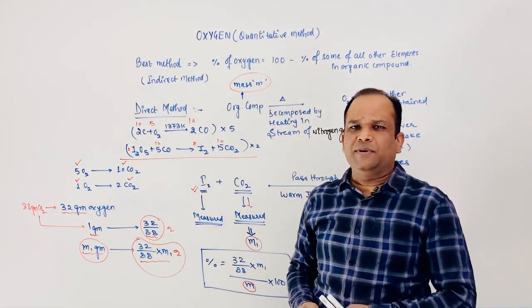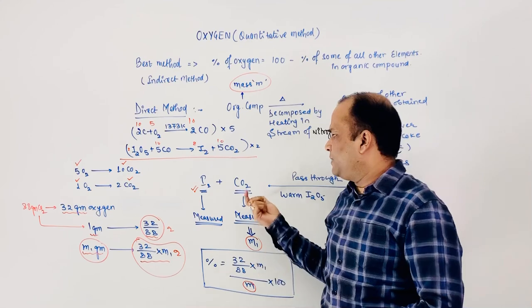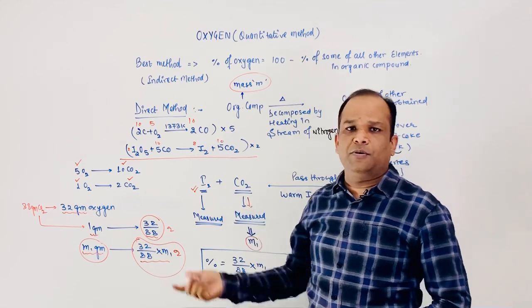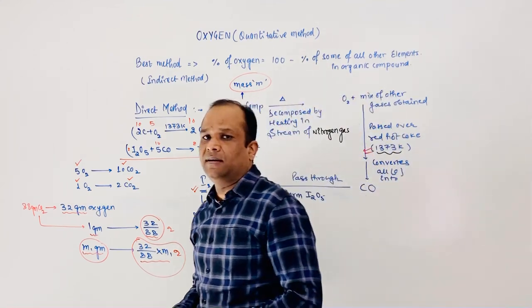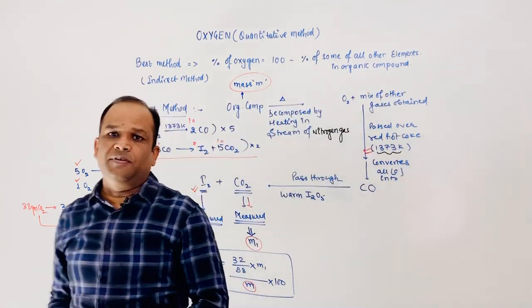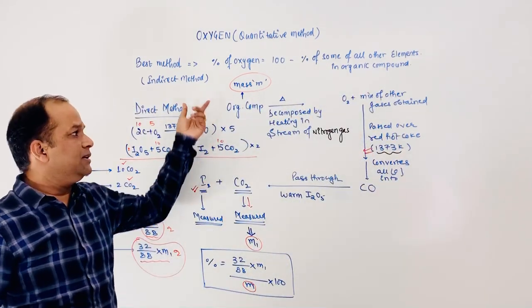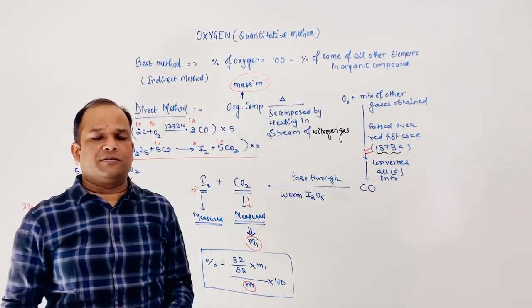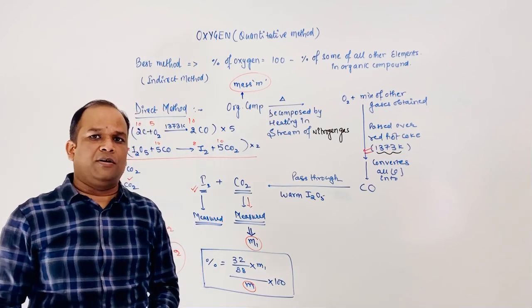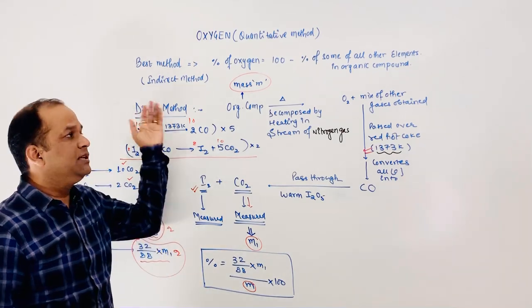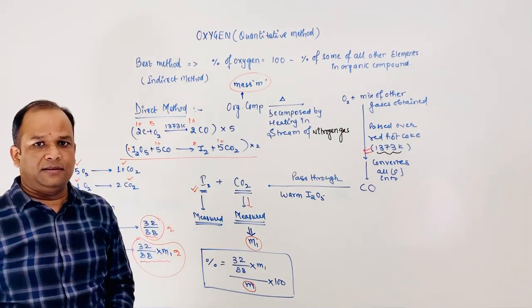So there are two direct methods: either by measuring CO₂ or by measuring iodine (I₂), we can find out the amount of oxygen present in the organic compound directly. Thank you.